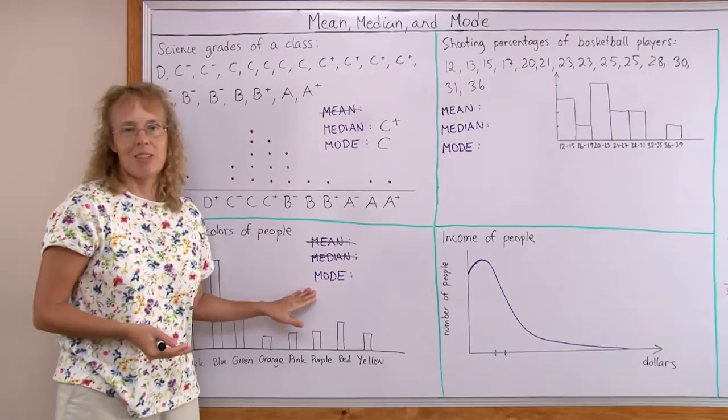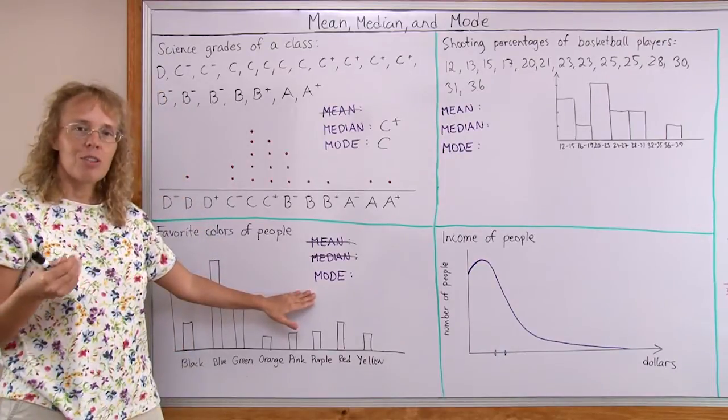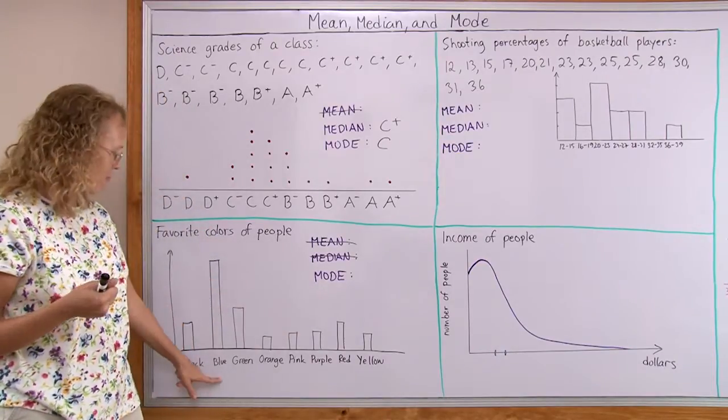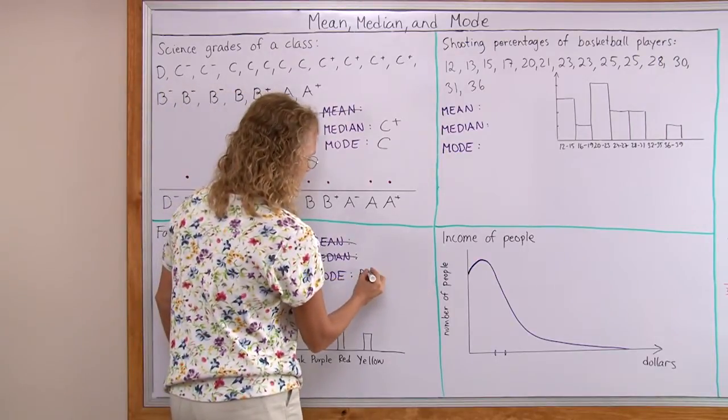The only thing we can find is the mode. What is the most common? What is the value occurring most often? Blue. So that's all we can do here.